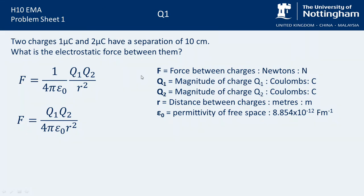So what have we got? We're going to say that Q1 is equal to 1×10^-6 Coulombs. Why is it times 10 to the minus 6? Well, that's because it's microcoulombs. We're going to say Q2 is equal to 2×10^-6 Coulombs because that's the 2 microcoulomb charge.